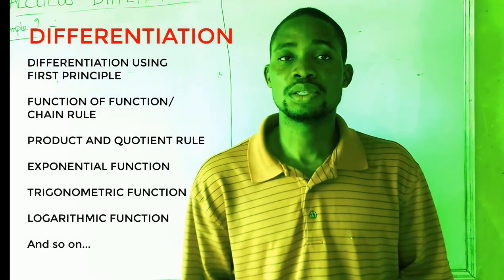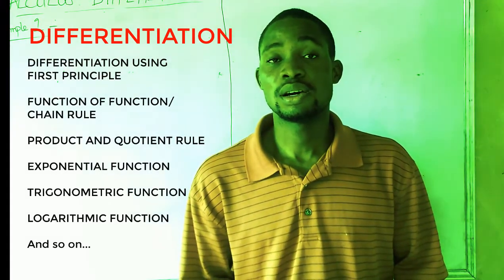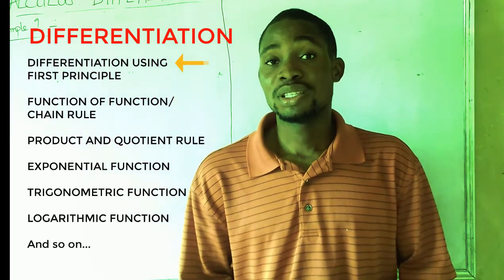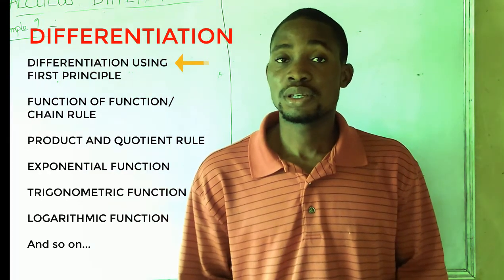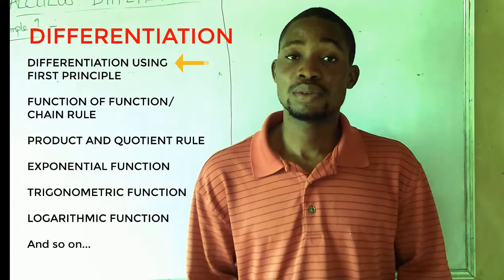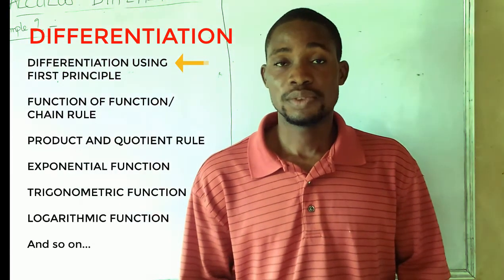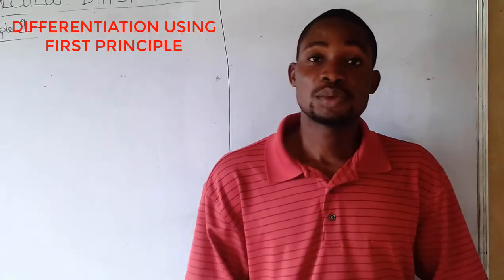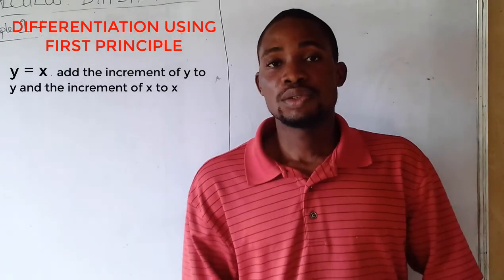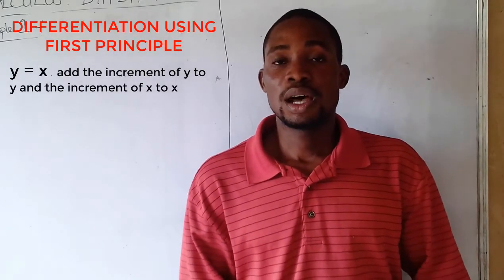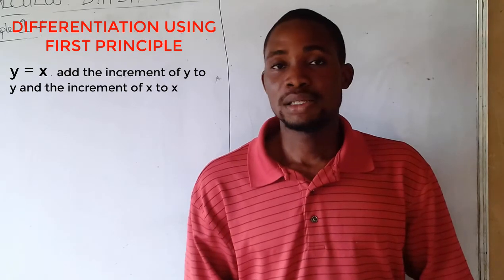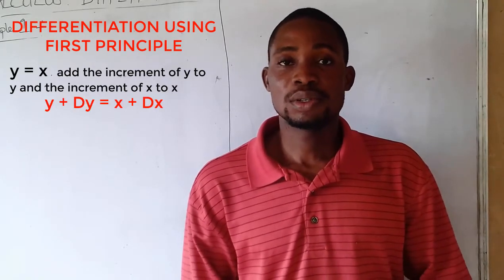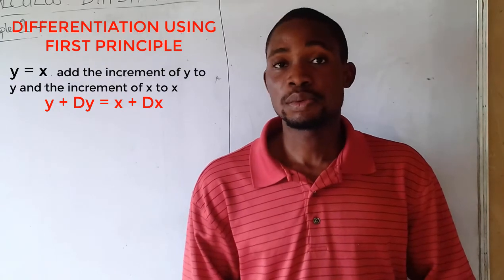For differentiation using first principle, I'm going to list some steps so I can easily answer questions. Given that y equals x, the first thing I have to do is add the increment of y to y and add the increment of x to x, which becomes: y plus δy equals x plus δx. That's the first step.